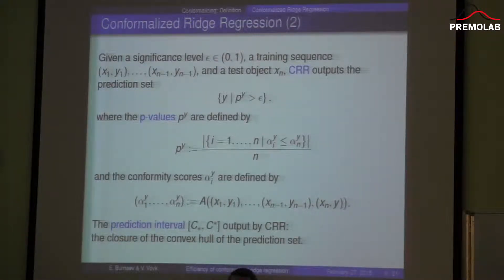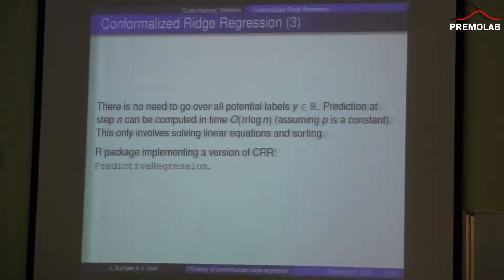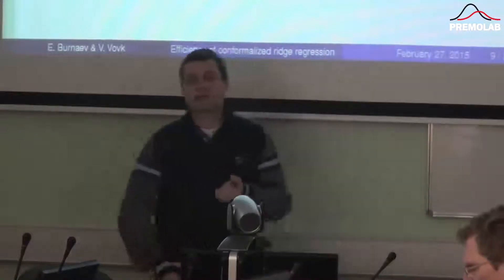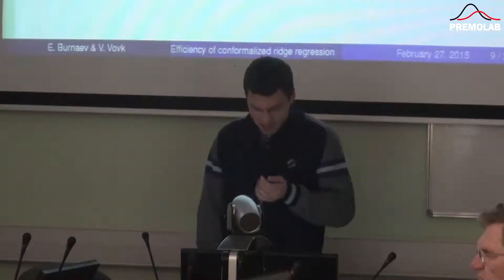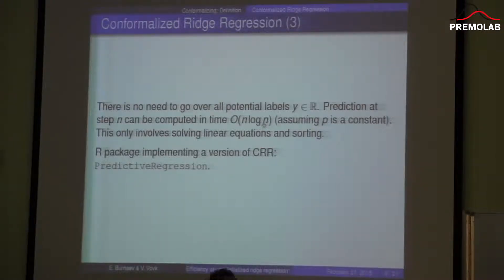In fact, it could be proved that although the set of possible y labels here is infinite, due to its specific structure, the prediction interval obtained through this procedure is really an interval. There is a procedure such that the left end and the right end of this interval can be efficiently calculated with complexity equal to n log n, where n is the sample size. That means that for any new observation, given a training sequence, we can calculate non-parametric prediction interval. Of course, we would like to ask ourselves whether this prediction interval is good or not.